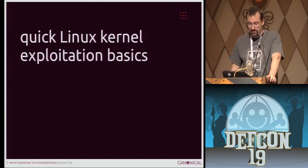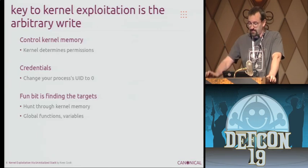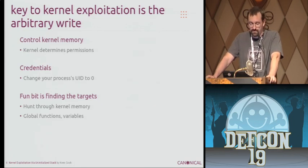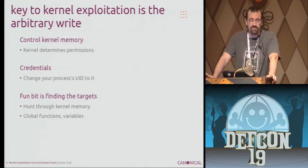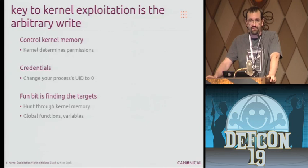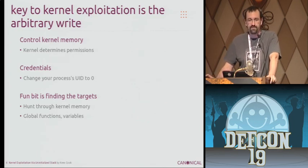A quick overview of Linux kernel exploitation. The main goal for any kind of kernel attack is to get control over execution flow. Usually you can just set the user ID of the process you're using to zero and you're root, and you have full control over the system. But actually finding targets to do this is what's tricky — you need an arbitrary write to start with, and then going from there is what makes things more fun.